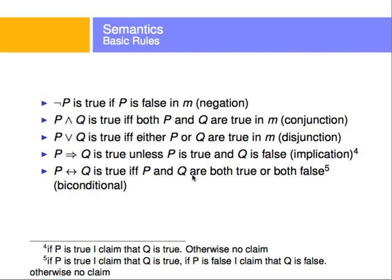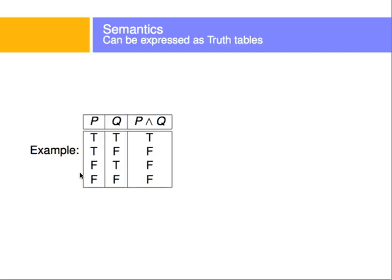The biconditional — P if and only if Q — is true if and only if P and Q have the same value. These rules can also be expressed as truth tables, where we enumerate all possible combinations of values for P and Q and define the resulting truth value. For example, P and Q is true only when both P and Q are true, and false otherwise.